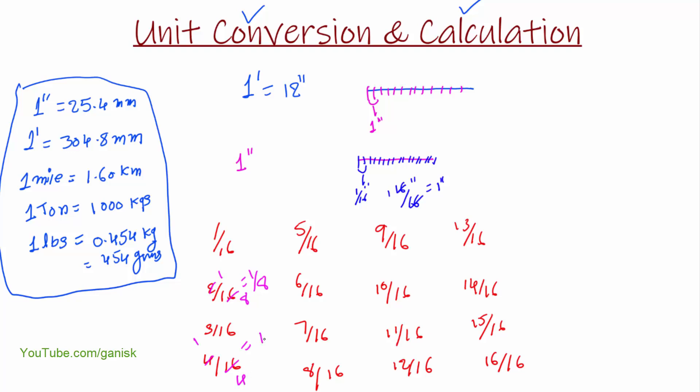Similarly, this is not divisible and this is divisible. So 6 by 16 we can directly call it as 3 by 8. And this is also divisible, so 1 by 2. And this is also divisible, so we can, final answer is 5 by 8. Now this is also divisible, so 3 by 4.